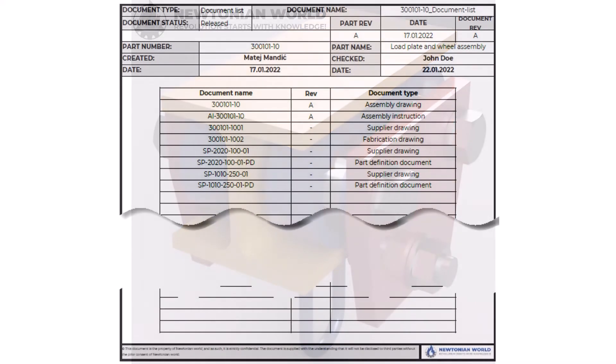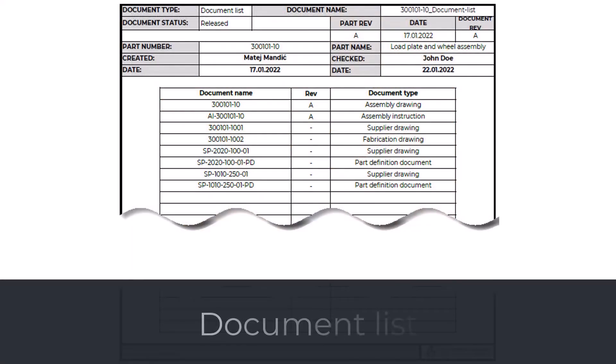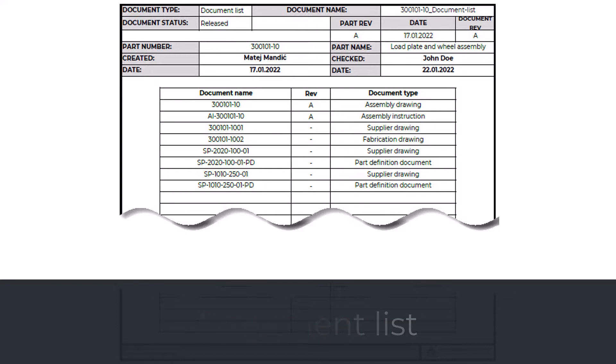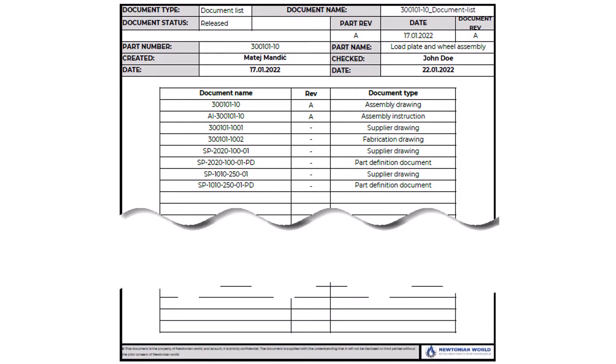The document list is defined as a formally built-up inventory in which all relevant documents for a specific purpose are listed. This document can belong to a system, part, project, etc. The best practice is always to display the document identification number and revision of a document list and all documents listed in it. Other information depends on the company's preferences.